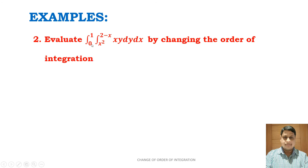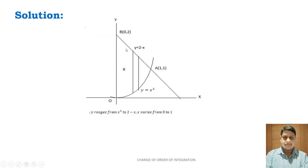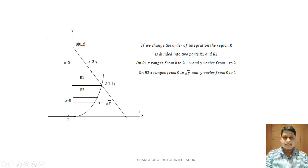Second example: evaluate the double integral from 0 to 1, x² to (2−x), of x·y dy dx by changing the order of integration. The curve y = 2−x is a line and y = x² is a parabola. Here y ranges from x² to 2−x, and x varies from 0 to 1. Changing the order of integration, the region R is divided into two parts R1 and R2. In region R1, x ranges from 0 to (2−y) and y varies from 1 to 2. In region R2, x ranges from 0 to √y and y ranges from 0 to 1.